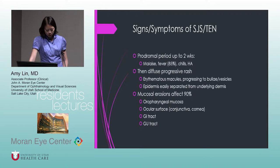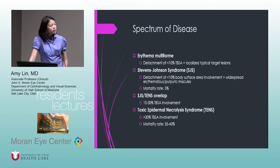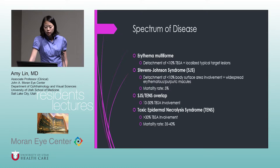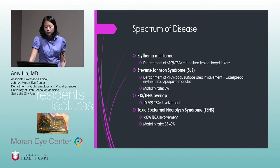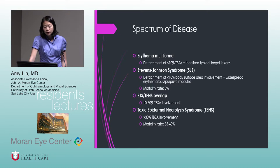This is actually a spectrum of disease. Erythema multiforme is detachment of less than 10% of total body surface area with localized typical target lesions. Stevens-Johnson syndrome is defined as detachment of less than 10% body surface area plus widespread erythematous and purpuric macules — mortality rate is only 5%. SJS/TEN overlap is 10 to 30% total body surface area involvement.